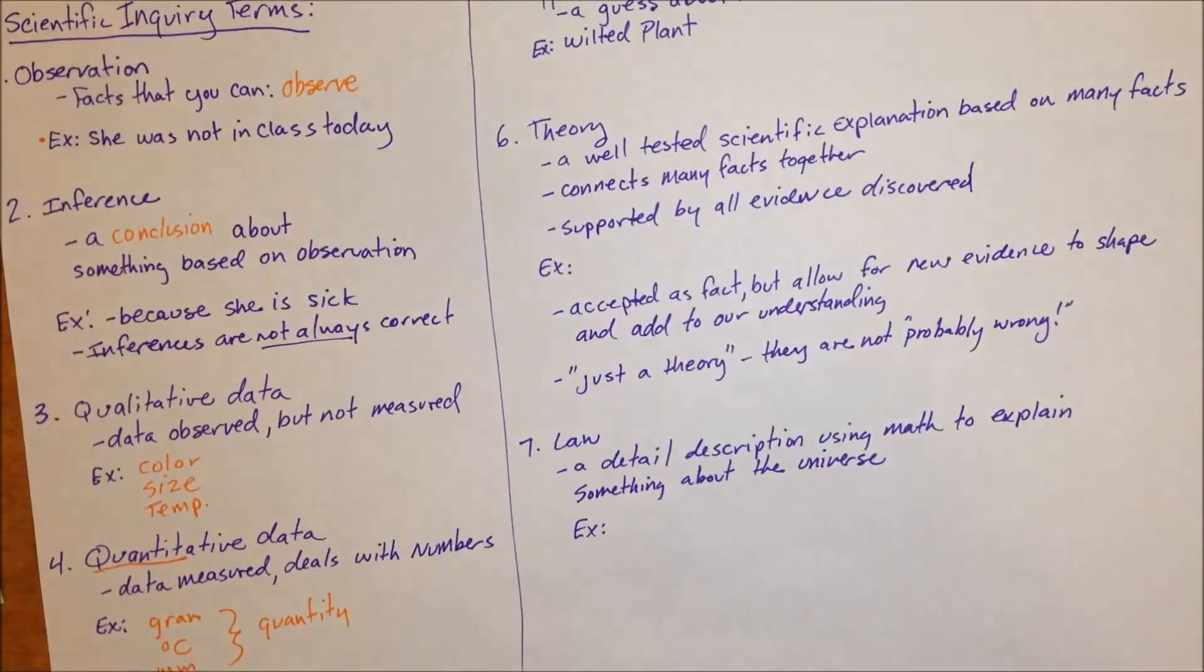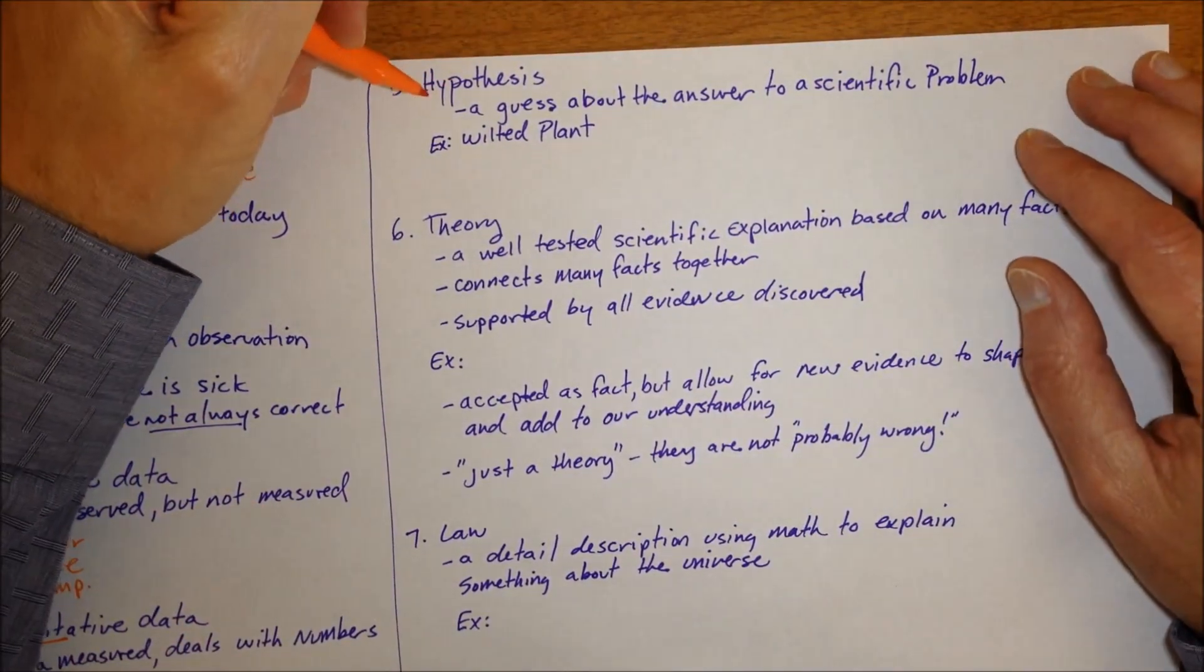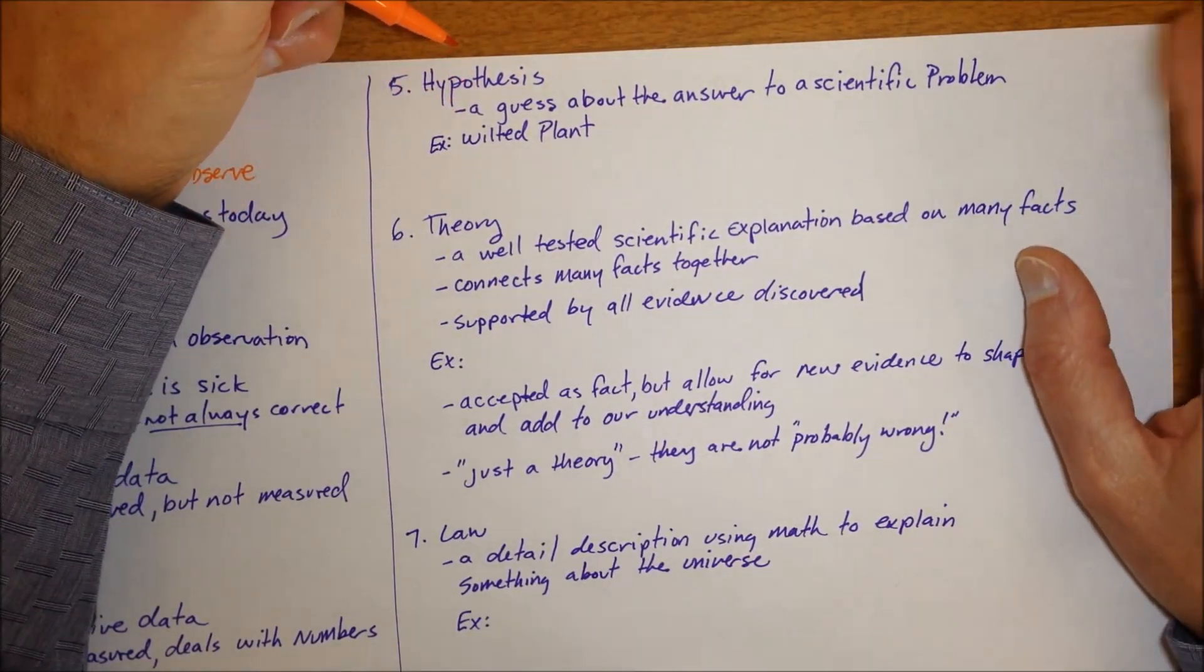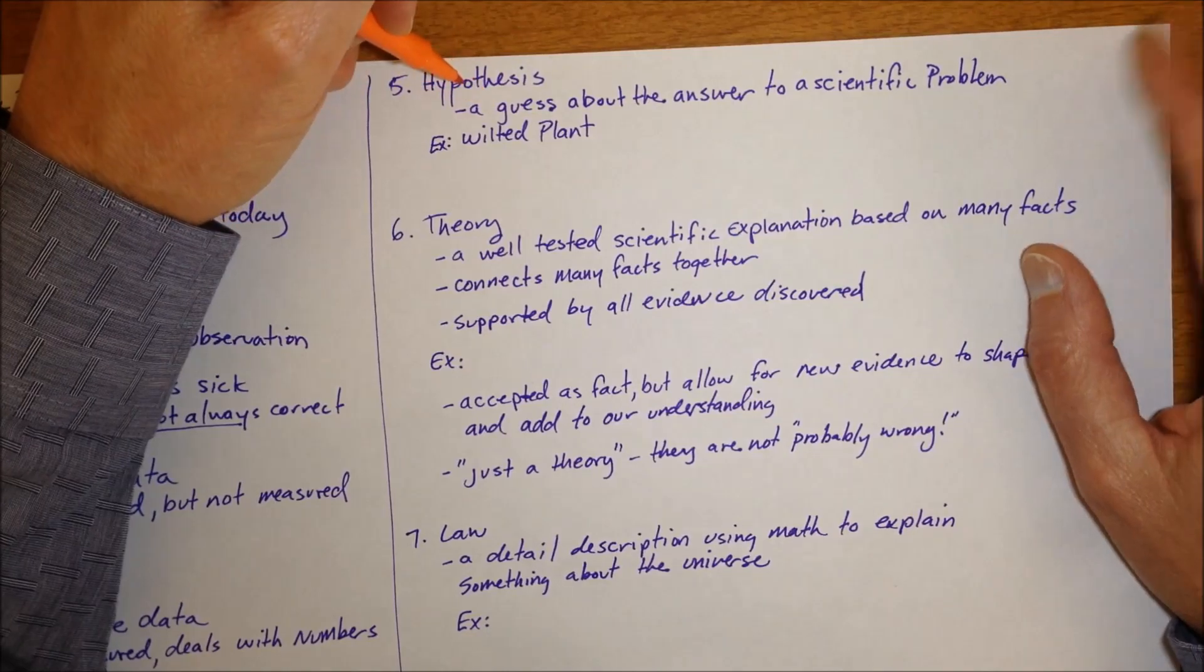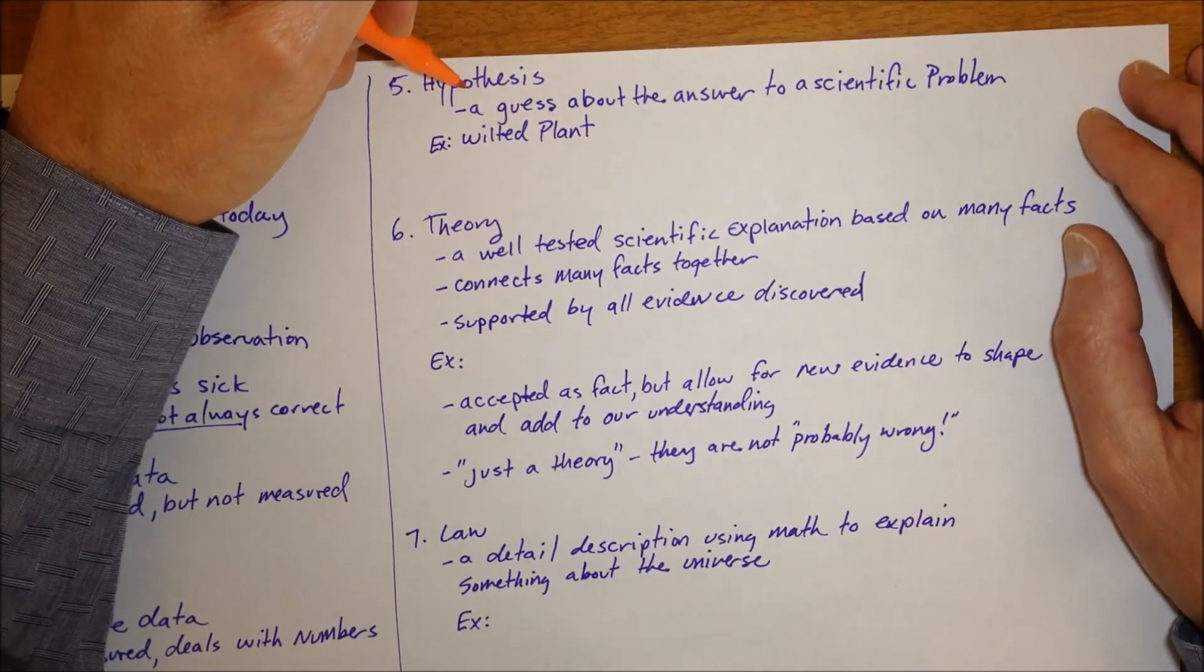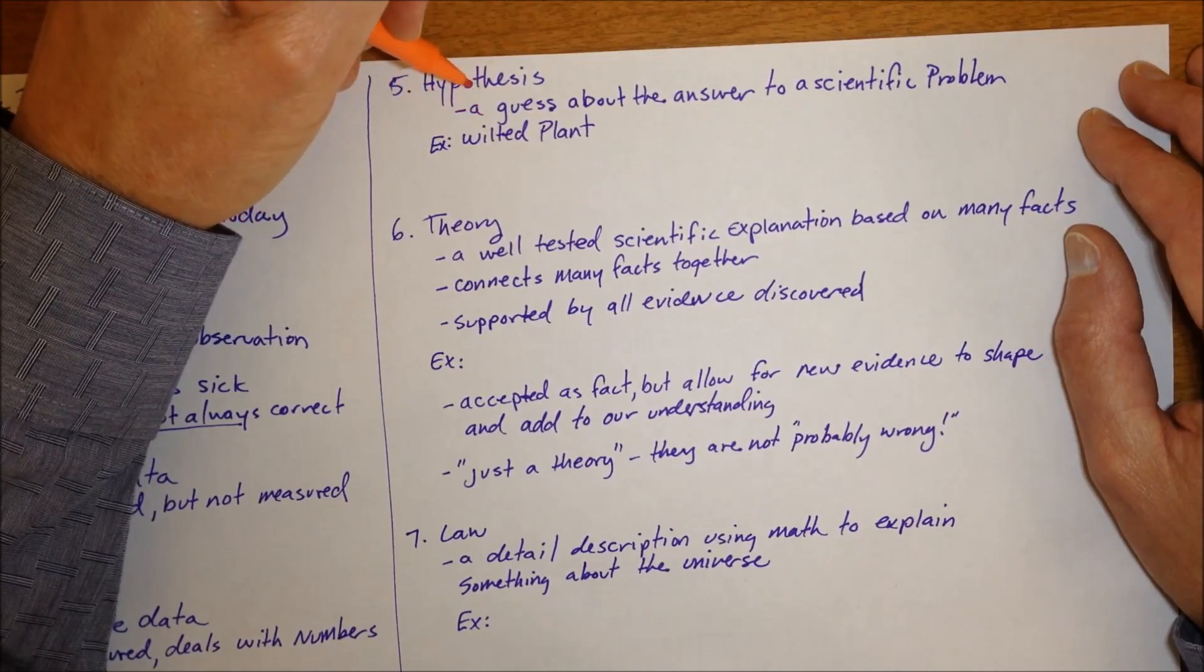Alright, so then moving on to hypothesis, theory, and law, the last bit of information for this unit. Hypothesis, most students know. I define it as a guess about the answer to a scientific problem. Often it's called an educated guess because step two of the scientific method is where you learn about your problem and so you become educated on that topic.